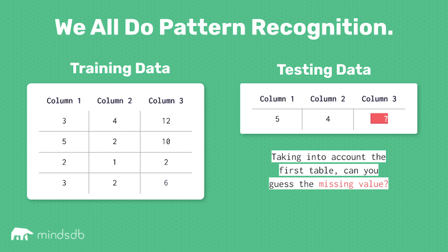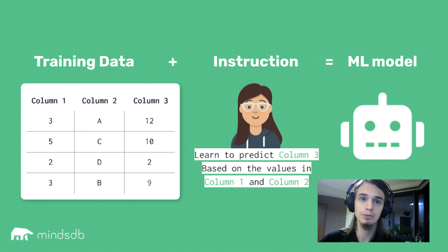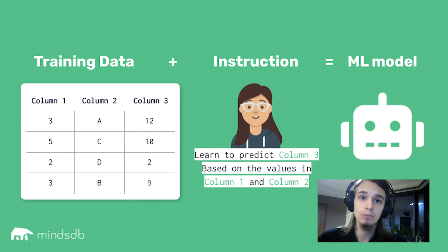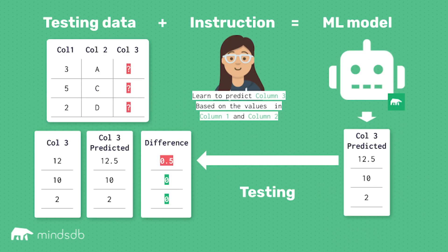Now what a machine learning algorithm would do essentially is — if you tell it 'hey I have this data, I want to figure out what's the relation between column one and column two that can generate column three' — a good machine learning algorithm would basically be able to figure out that it's a multiplication.